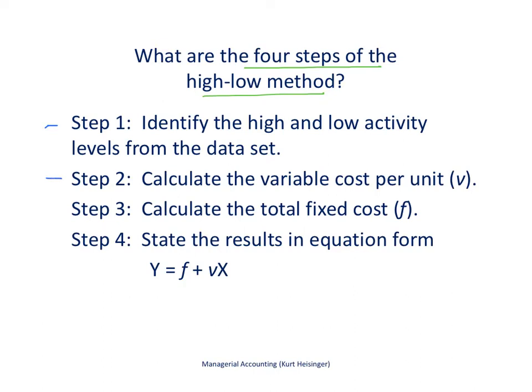Step 2 is then to take that information and calculate the variable cost per unit. Step 3 is to calculate the total fixed cost. And then we take that information in step 4 and plug it into this equation, Y equals f plus vX. That is, we take our variable cost per unit that we figured out in step 2 and plug it in here, and we take the total fixed cost that we determine in step 3 and we plug it in here. Then we have everything we need to estimate Y given a certain level of activity X.